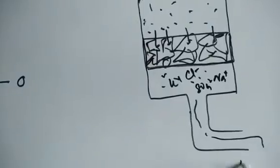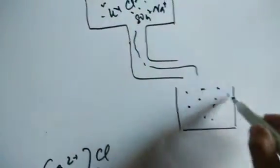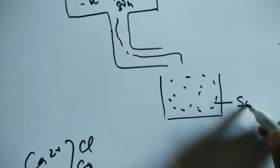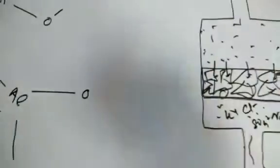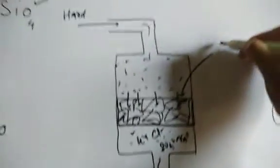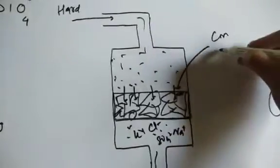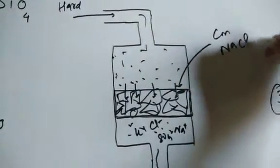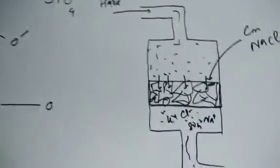Ions like sulfate and chloride — being anions — will not get trapped in the pores, so they pass through. The water coming out is free from calcium and magnesium ions, meaning their concentration has been reduced. This process is called softening of water. To reuse the zeolite, we load it back with sodium by passing a highly concentrated brine solution of sodium chloride through it.